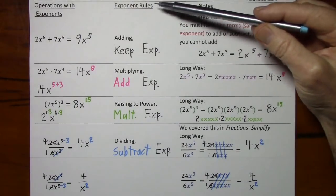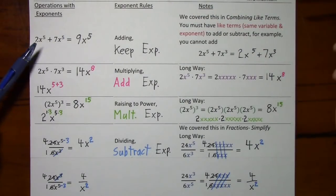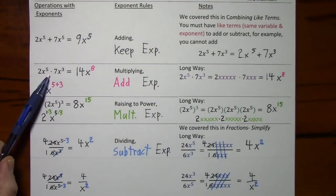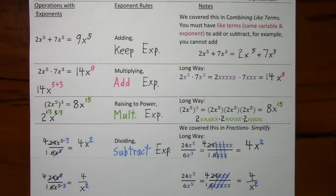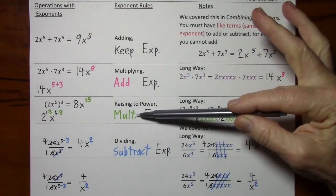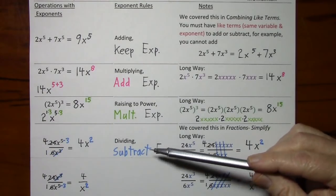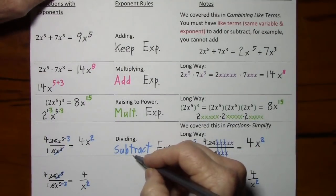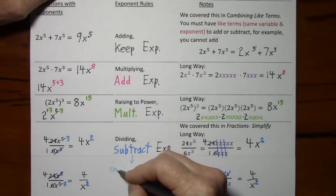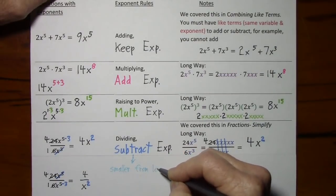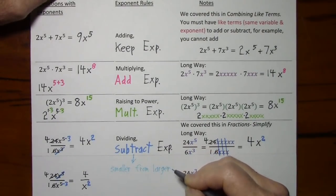So a fast recap of all the rules. When you're adding, you keep the exponent. When you're multiplying, you add the exponent. When you're raising to a power, you multiply the exponent. When you're dividing, that's what this bar indicates, you subtract the exponent, so long as you remember to subtract smaller from larger.